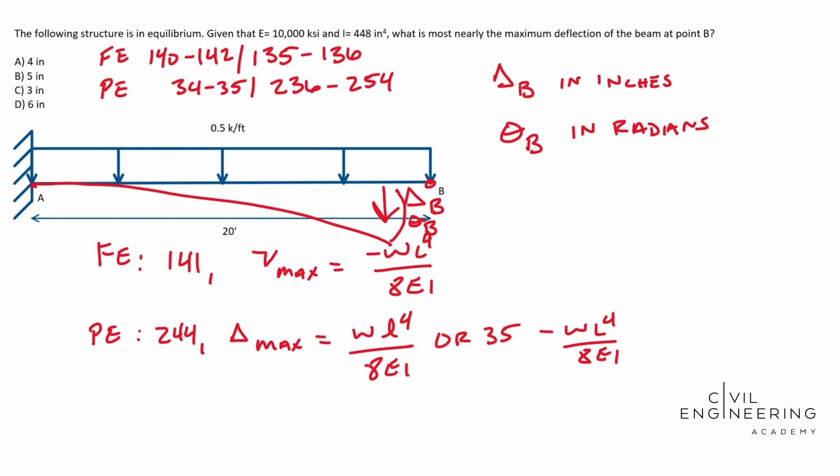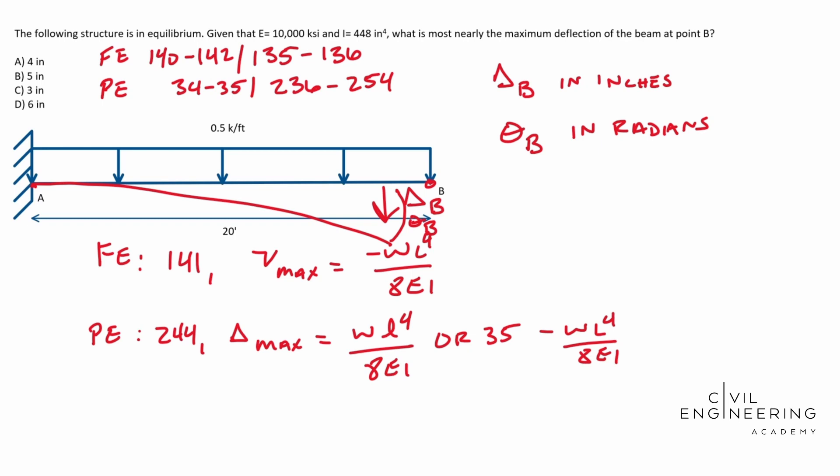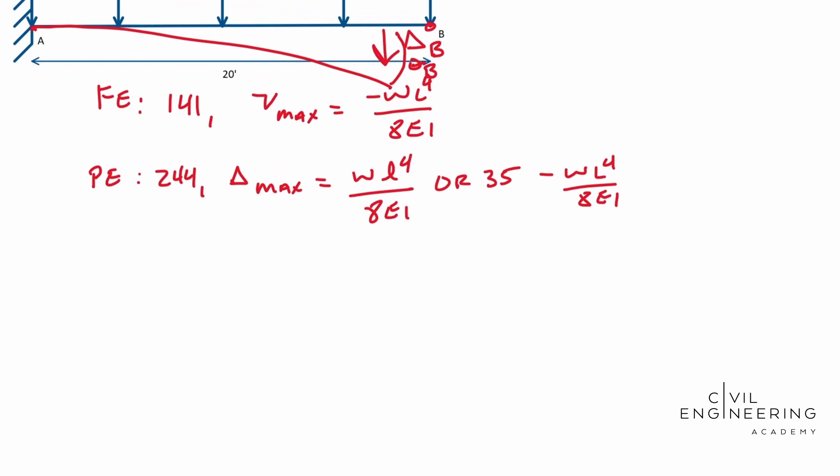So what is our W? I'm going to scroll down a little bit. What is our W? That's going to be our 0.5 kips per foot. Our L is going to be 20 feet because that's the entire length that it acts. What's our E? Well, that was given in the problem, 10,000 KSI. And our I is 448 inches to the fourth. Very good.